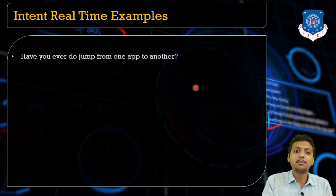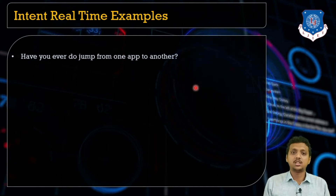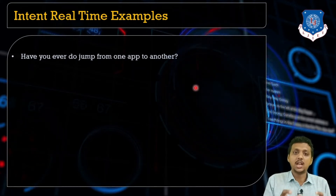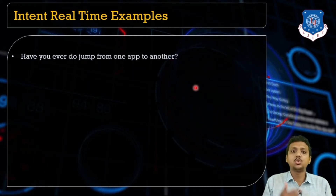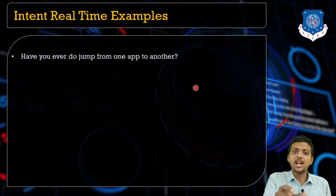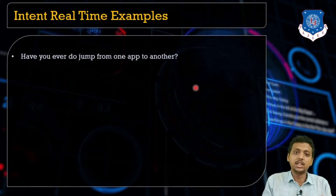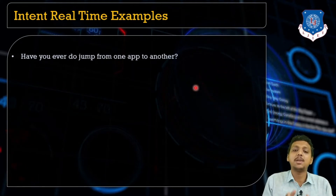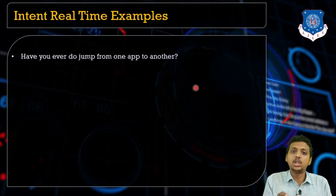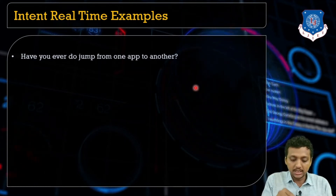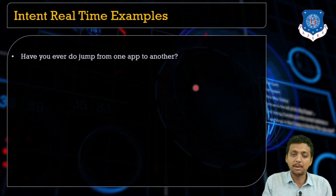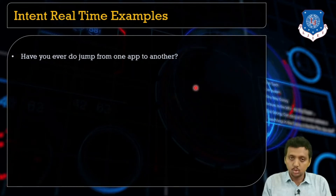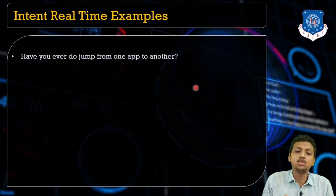What is the real-time example for intent? When you try to make a payment from Paytm, it may generate a link and you get an SMS with a payment link. When you register for a workshop or webinar, they send an SMS and by clicking that link you are redirected to your Paytm, PhonePe, or Google Pay application. You are moving from one application to another and passing data between apps — this happens with the use of intent.